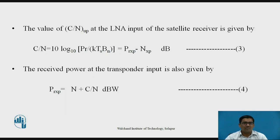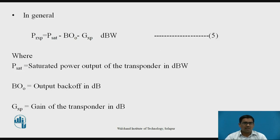The value of C/N at the LNA input of the satellite receiver is given by C/N = 10 log base 10 (P_R / (K·T_s·B_n)). After simplification we get P_Rxp - N_xp, that is the C/N ratio. The unit is dB. The received power at the transponder input is also given by P_Rxp = N + C/N. The unit is dBW.